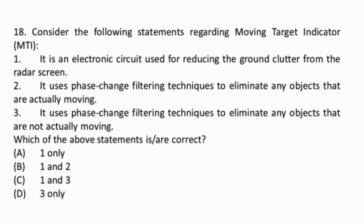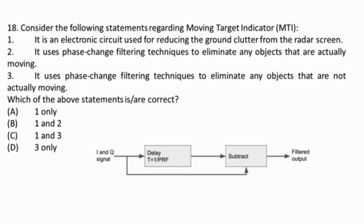Question 18: Moving target indicator radar uses the Doppler effect to distinguish between stationary and moving targets by comparing the phase and amplitude of received signals to a reference signal. This allows it to filter out clutter from stationary objects. Thus with the use of moving target indicator radar, stationary targets are filtered out using a phase comparison technique. Statements one and three are correct.